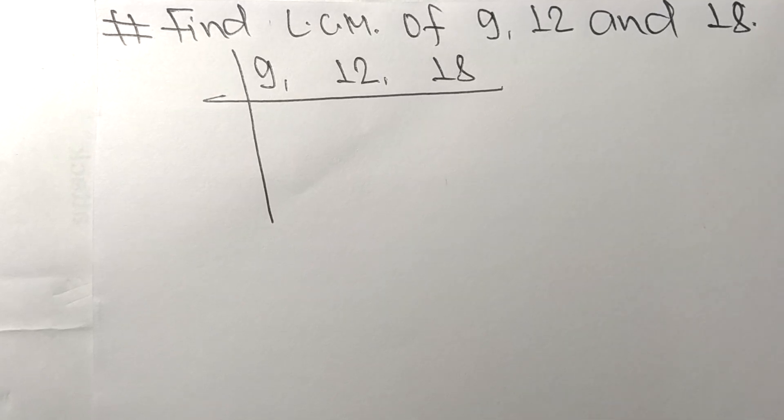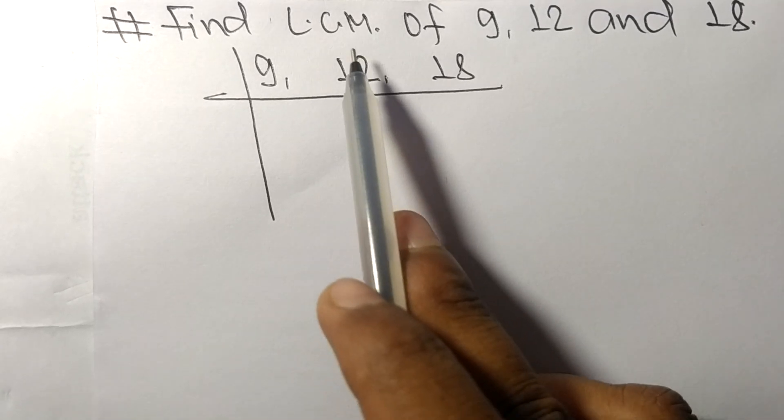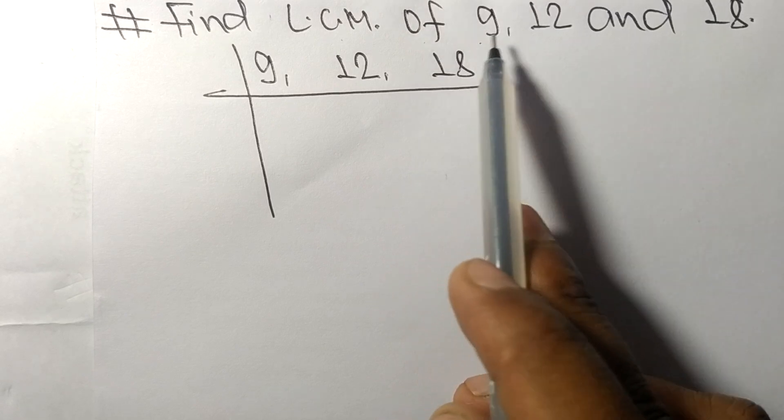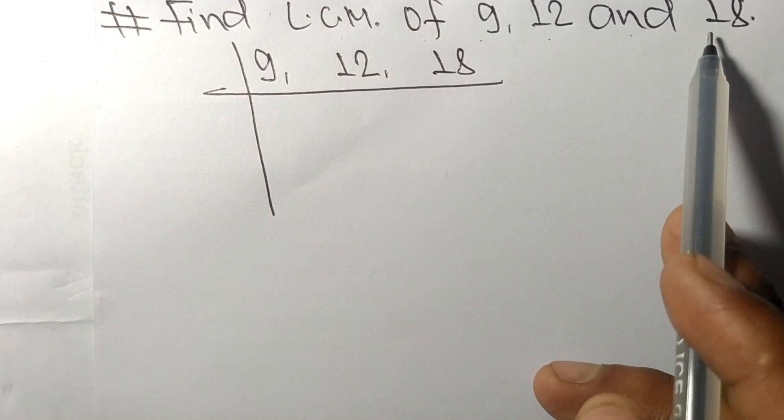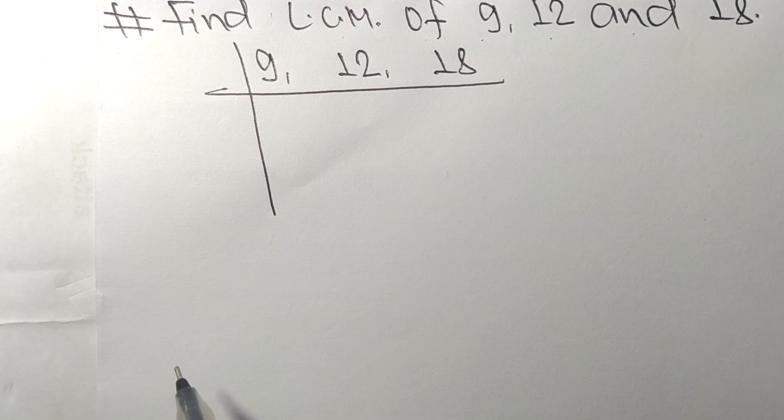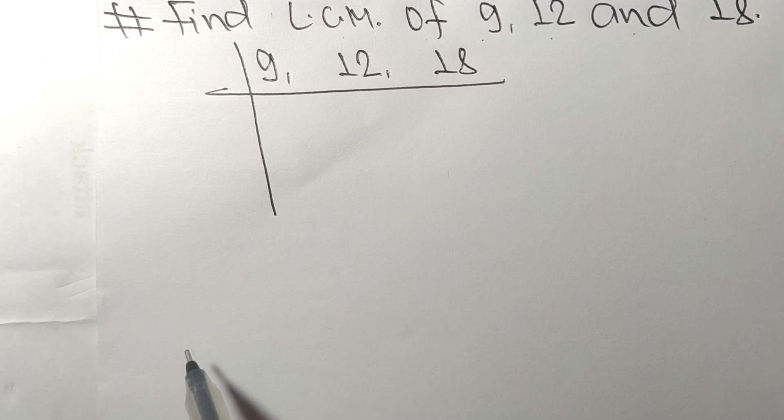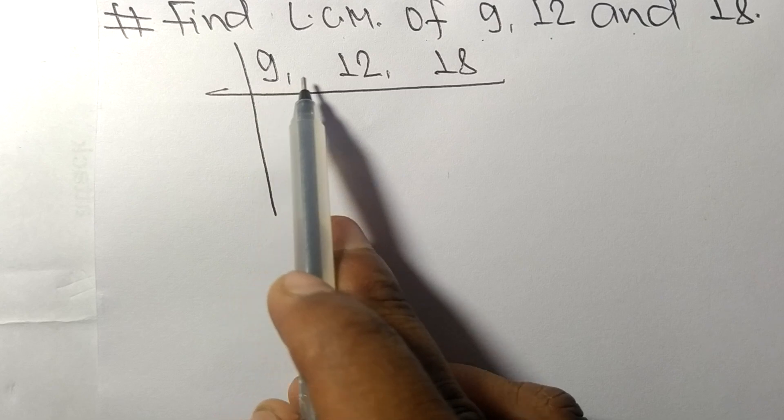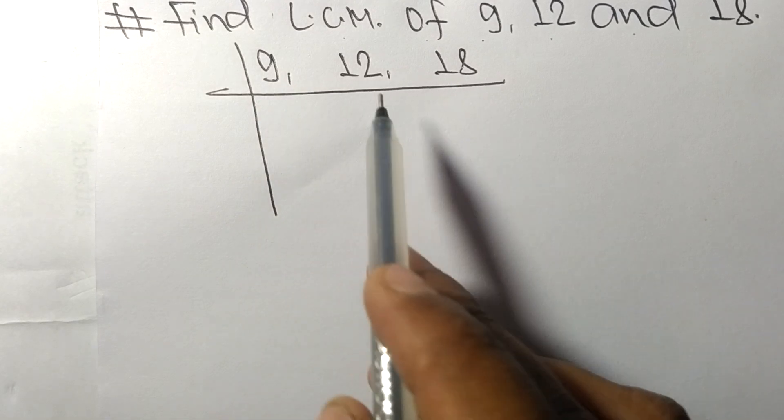So today in this video we shall learn to find the LCM of 9, 12 and 18. To find LCM we have to choose the lowest number that can exactly divide at least any two of these numbers.